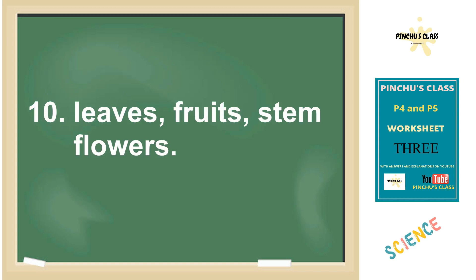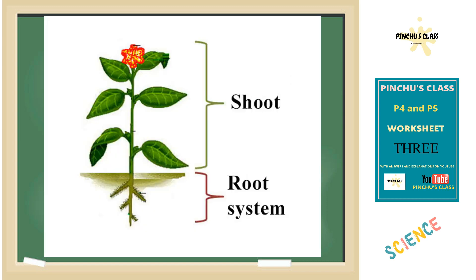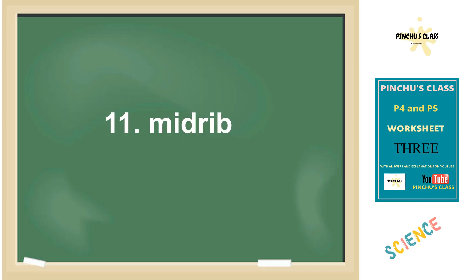Number ten: one part of the shoot system — when you look at that plant, we have the leaves, the fruits, the stem, the flowers, and the branches. All of those are parts of the shoot system.